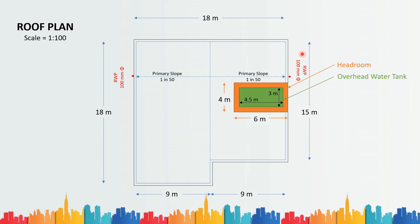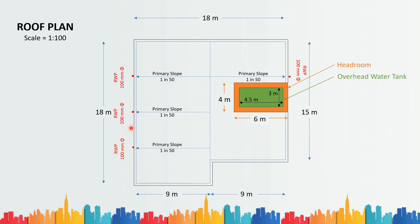Similarly, on the other side, you provide a slope and connect it to a rainwater pipe of 100 mm diameter. Rainwater pipes are available in various sizes: 50 mm, 65 mm, 100 mm, 125 mm, 150 mm, and so on. The diameter of the rainwater pipe is chosen depending on how much roof area of water it will be carrying — there are tables for this. Depending on how big the roof is, you can provide rainwater pipes at various locations, and the slopes have to be shown on both sides accordingly.